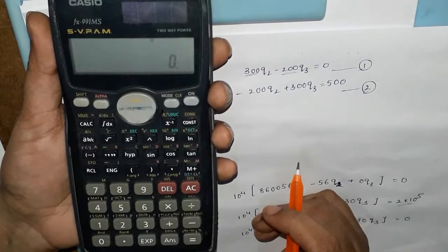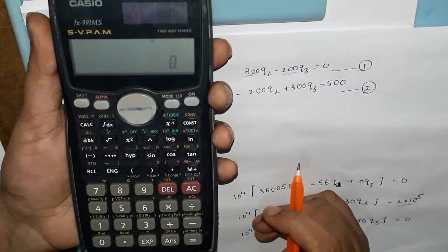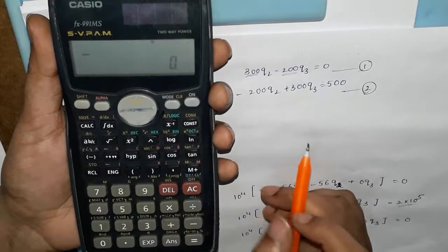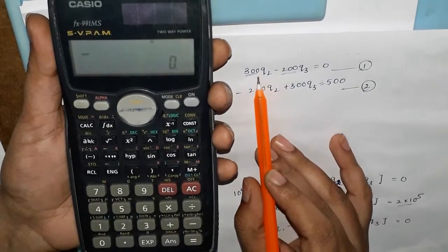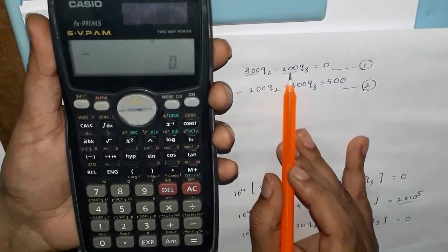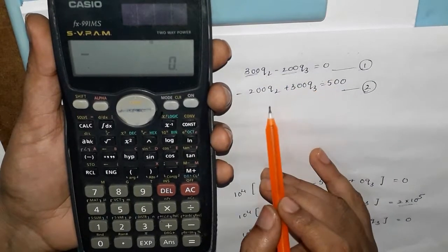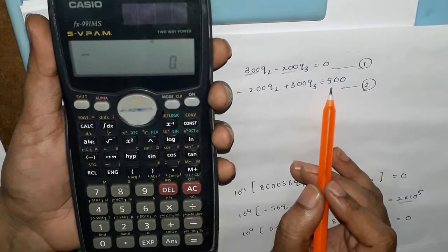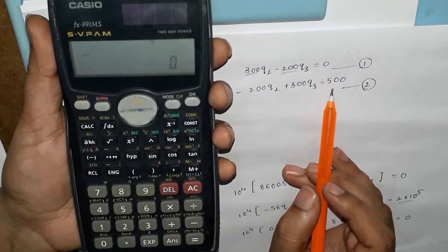Using the calculator in this video, we'll find a maximum of 3 unknowns. First of all, to find 2 unknowns, we have 2 equations: 300q₂ minus 200q₃ is equal to 0, and minus 200q₂ plus 300q₃ is equal to 500.